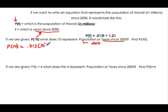So we put 0.013 times 10 plus 1.21. Remember, what's inside the parentheses replaces the variable, so that's why we have a 10 here.